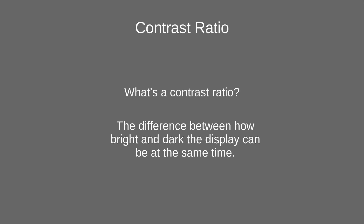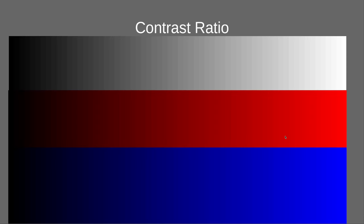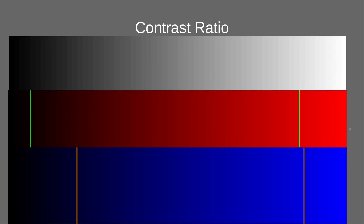You might think every monitor can just show pure white and pure black at the same time — well, not necessarily. Here are some gradients, and depending on the display you're using to view these, they might not all look the same. On my IPS monitor, I can see a pretty clear box on all the white gradient sections, but on the red and the blue ones that's definitely not true. I'm going to draw some lines showing roughly where the visible range ends for me — this whole section over here blends together pretty well, whereas on the white gradient I can see them all separately.